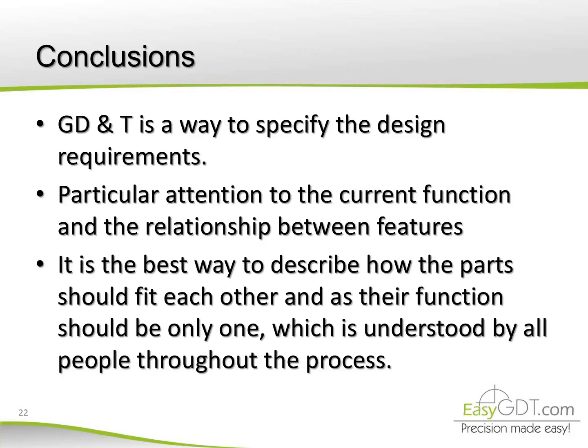Conclusions. GD&T is a way to specify design requirements, with particular attention to the current function and the relationship between features. It is the best way to describe how parts should fit each other, and their function should be only one — understood by all people throughout the process.